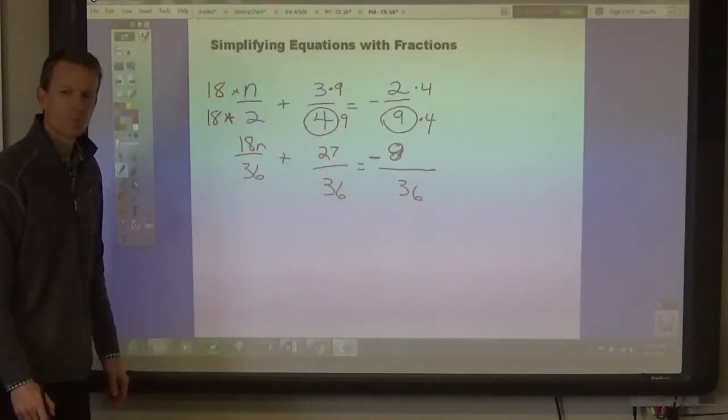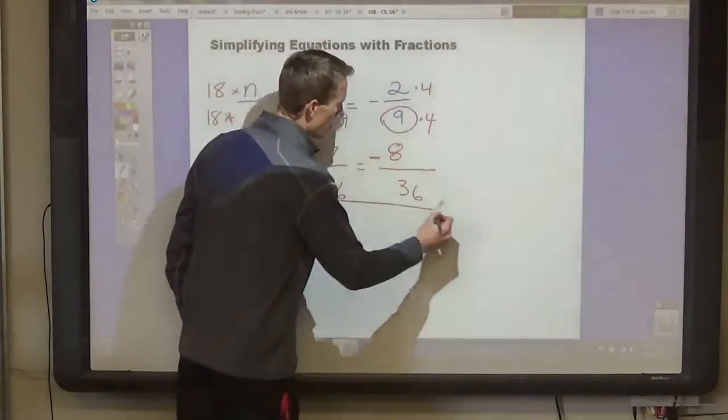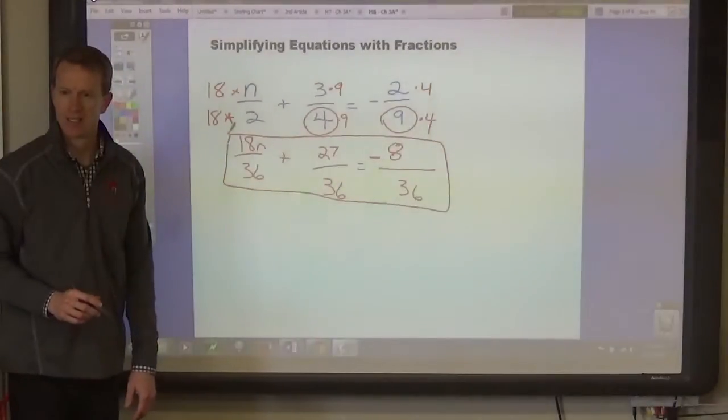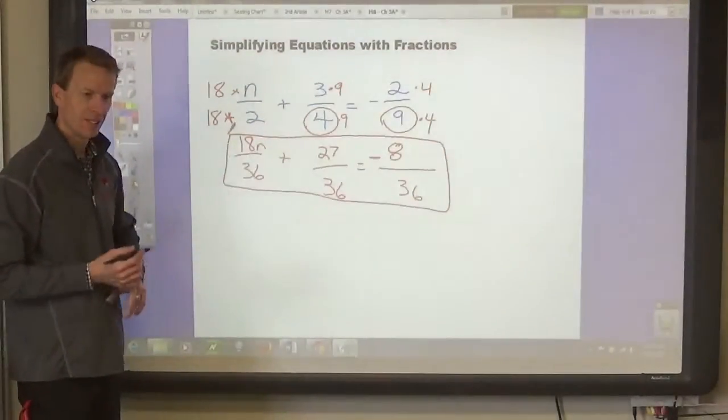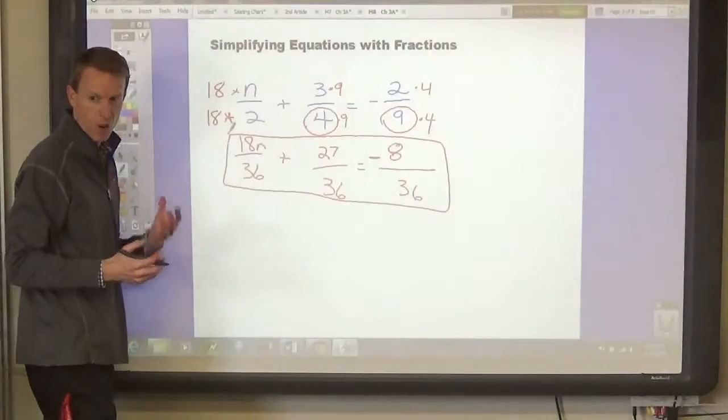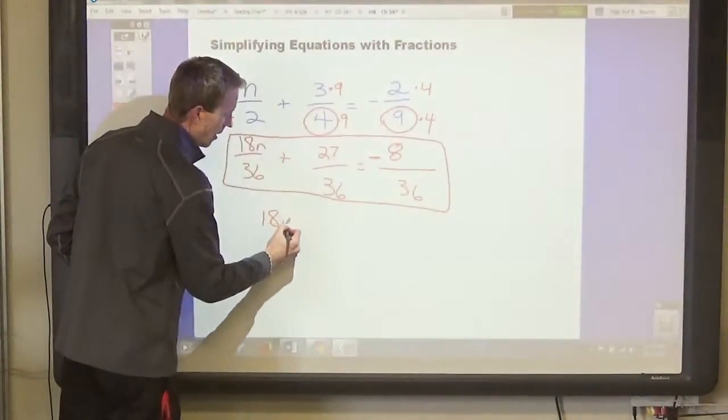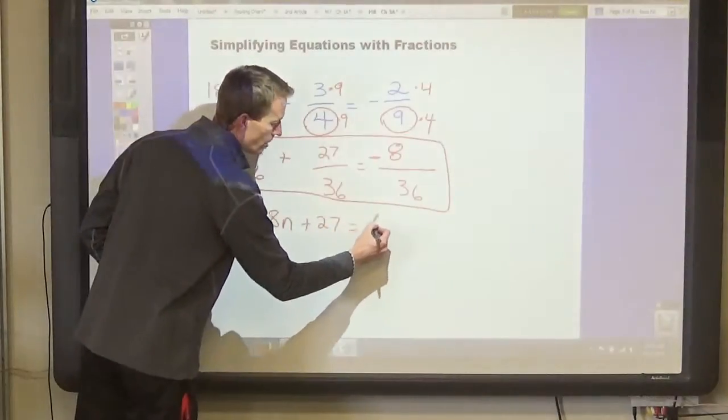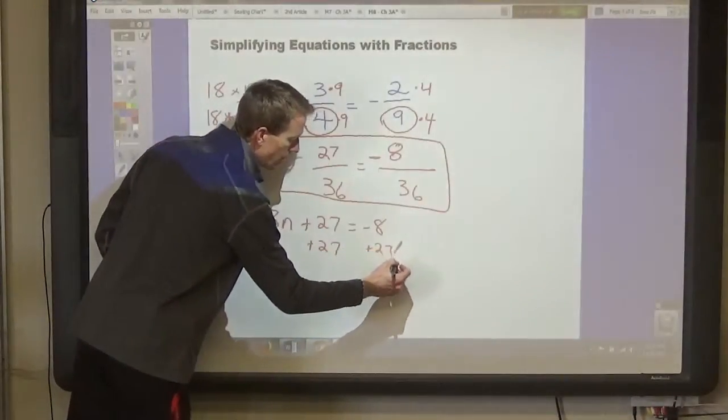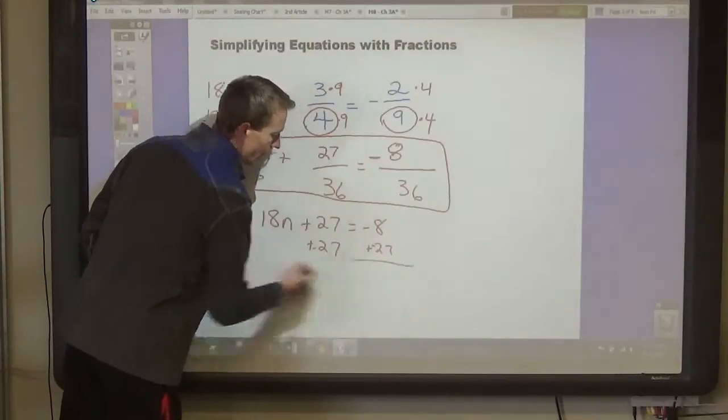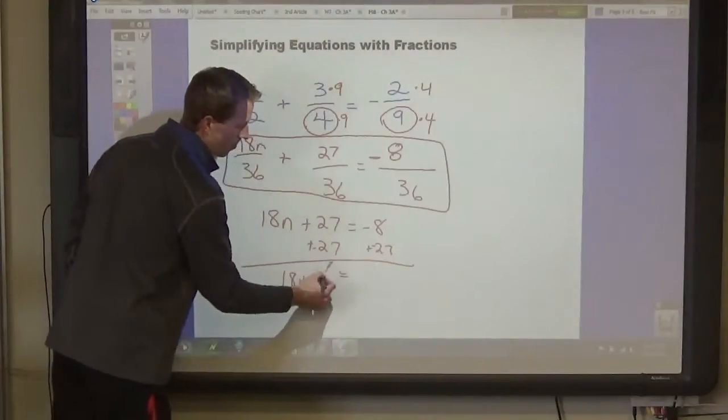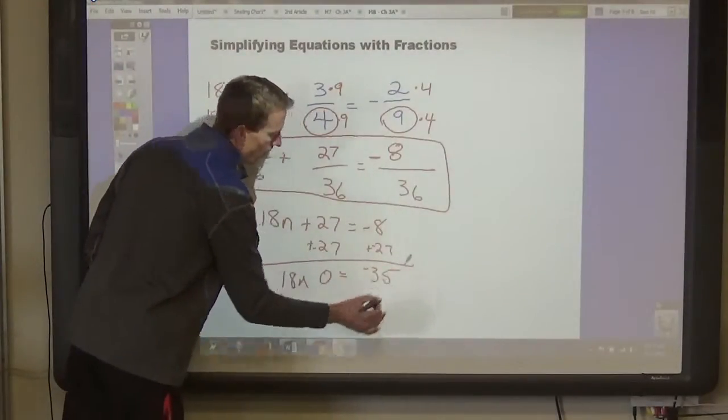Okay? Now, let me show you something. Once we have all of these with the same denominator, we can just ignore the denominators to find what n is. So now we have them all with the same denomination. We have all the same size pieces. So we can just write 18n plus 27 equals negative 8. Wow. Add 27 to both sides. You mean negative 27. Oh, sorry, negative 27. Which would be? Plus 0. Negative 35. Yeah. I'm too smart.